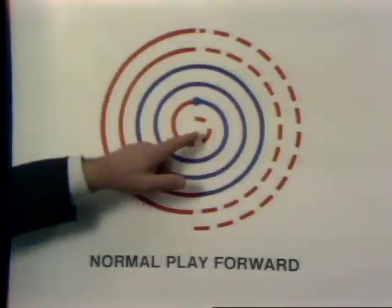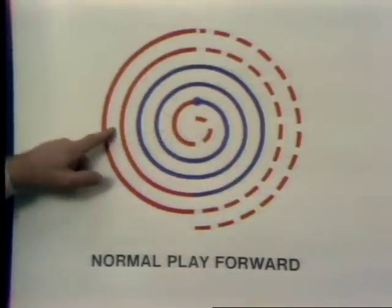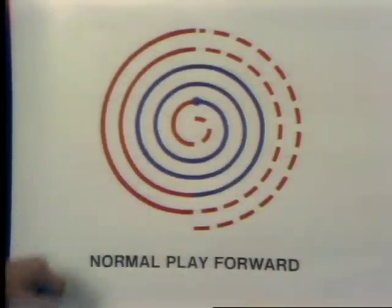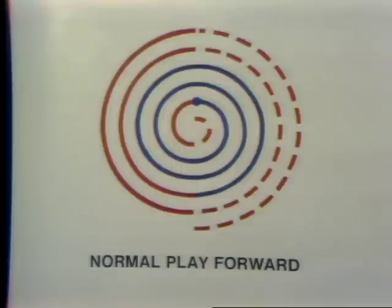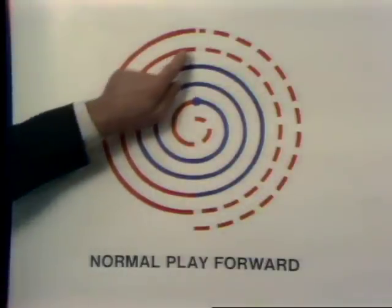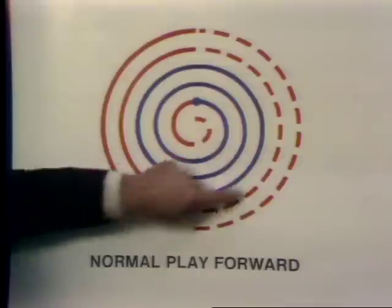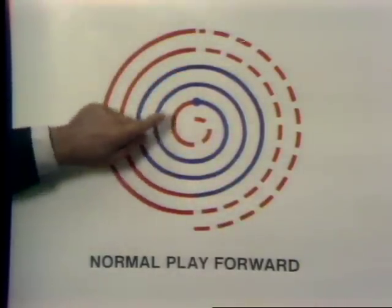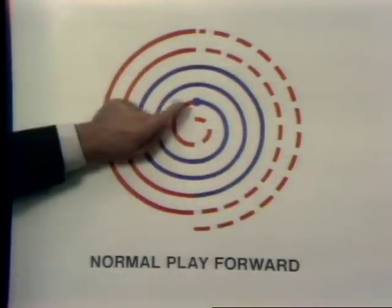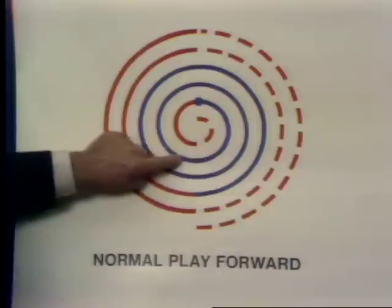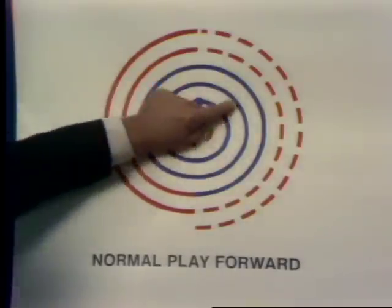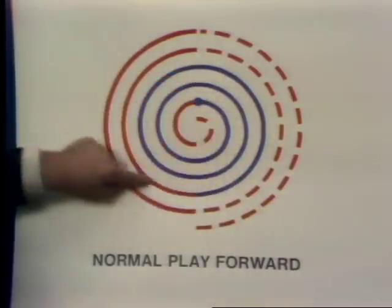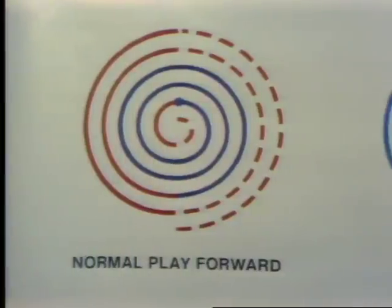This spiral represents several tracks on the laser disk. One track consists of two fields — in other words, the TV picture is scanned from top to bottom twice during each revolution of the disk. So each revolution produces one picture on the TV screen. In normal play, there is no track jumping; the beam merely follows the spiral track from the inside to the outside.